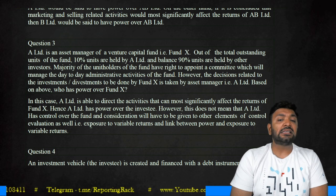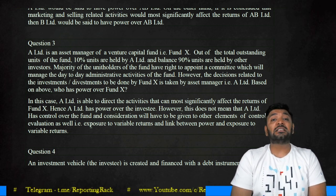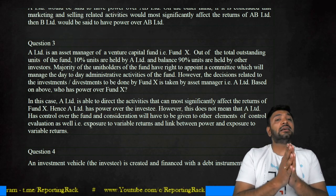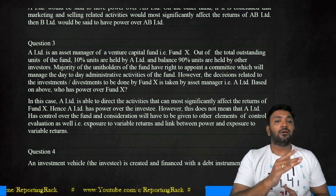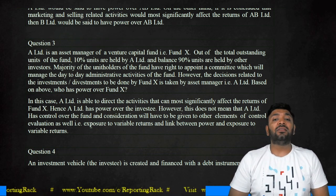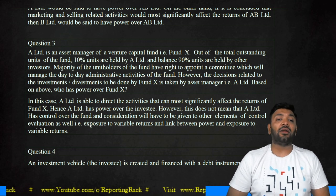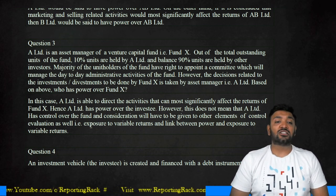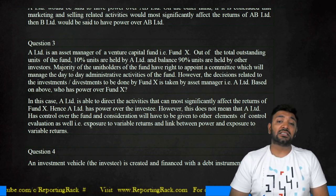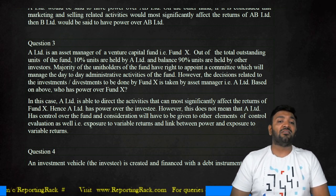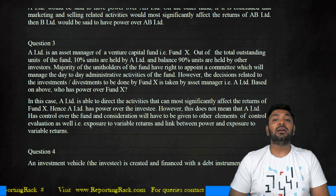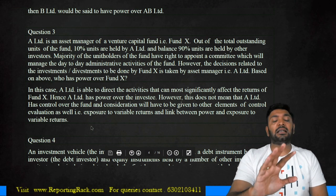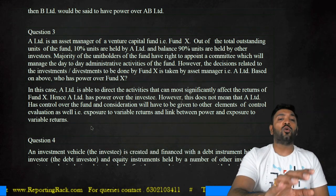Based on the above, who has the power over Fund X? In this case, A Limited can direct the activities and has power to influence the returns of the fund. Therefore, it is A Limited which has power over Fund X. A Limited is able to direct the activities that can more significantly affect the returns of Fund X. However, this does not mean that A Limited can control the fund — consideration will be given to other elements of control evaluation as well, that is, exposure to variable returns and the link between power and exposure to variable returns. But ultimately, A Limited has control over Fund X.